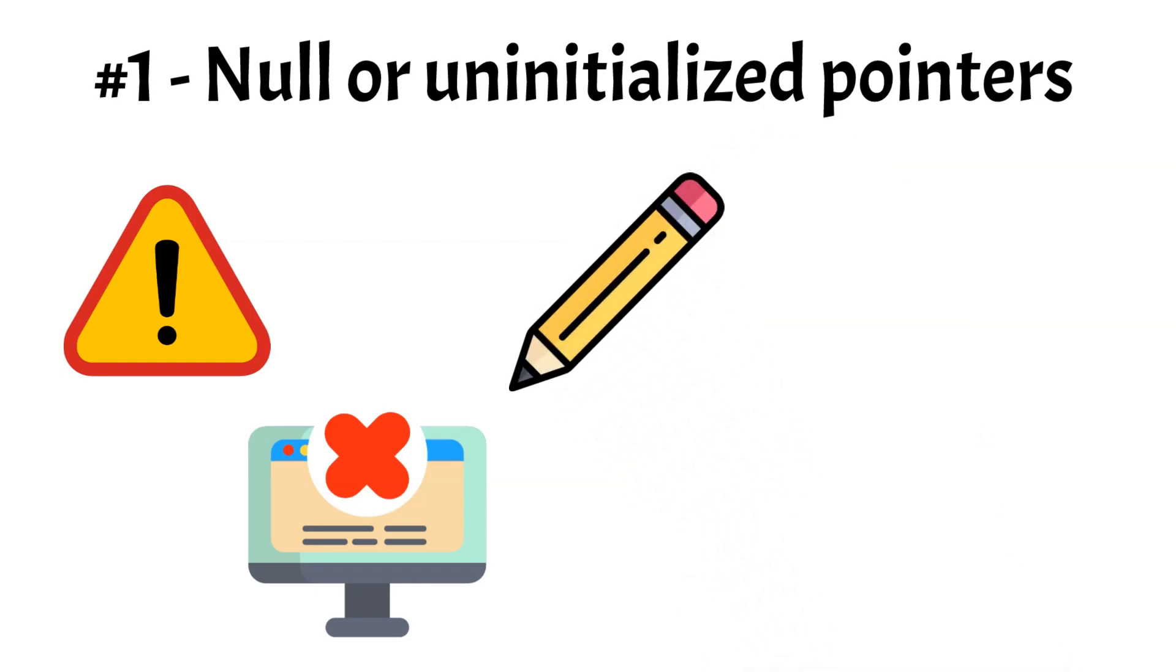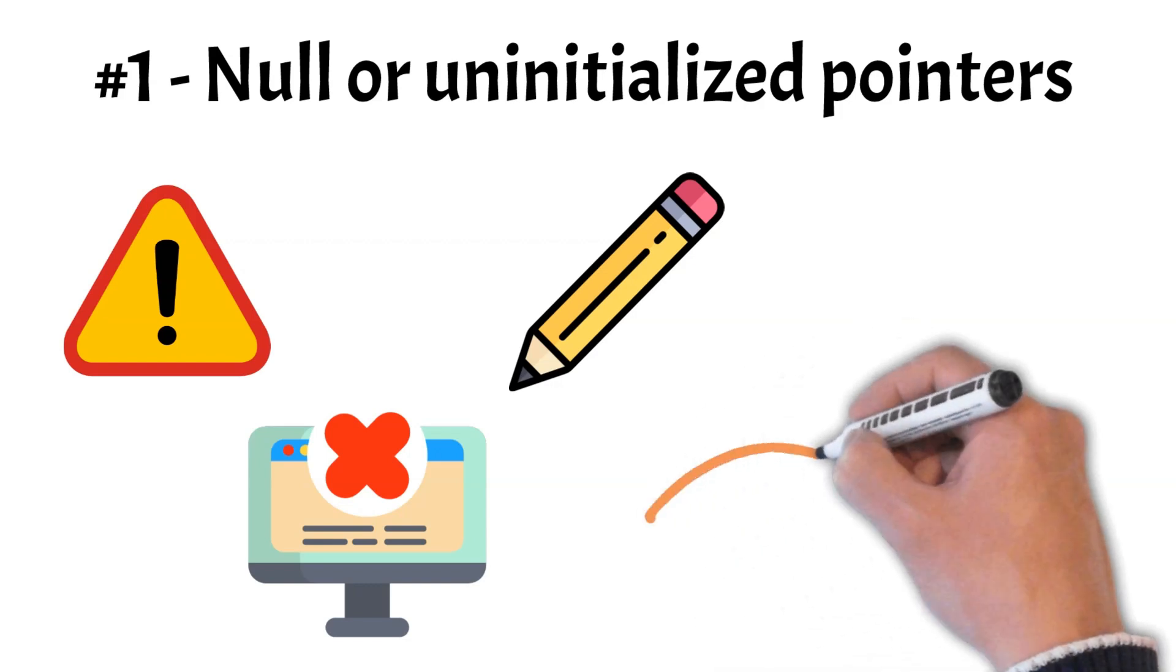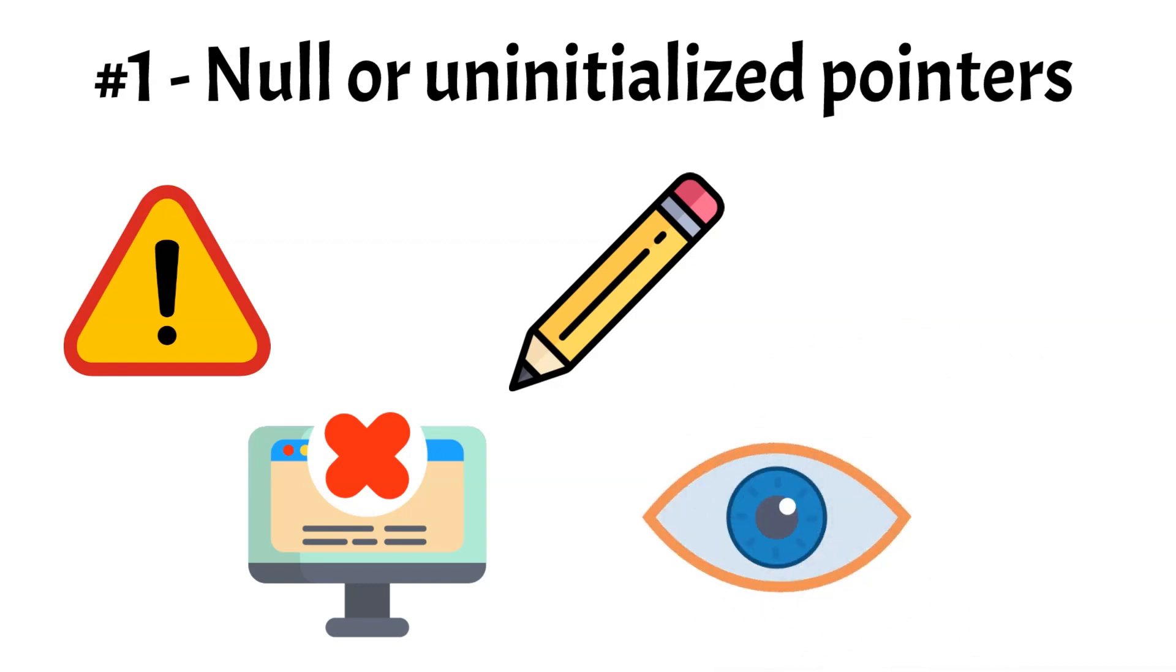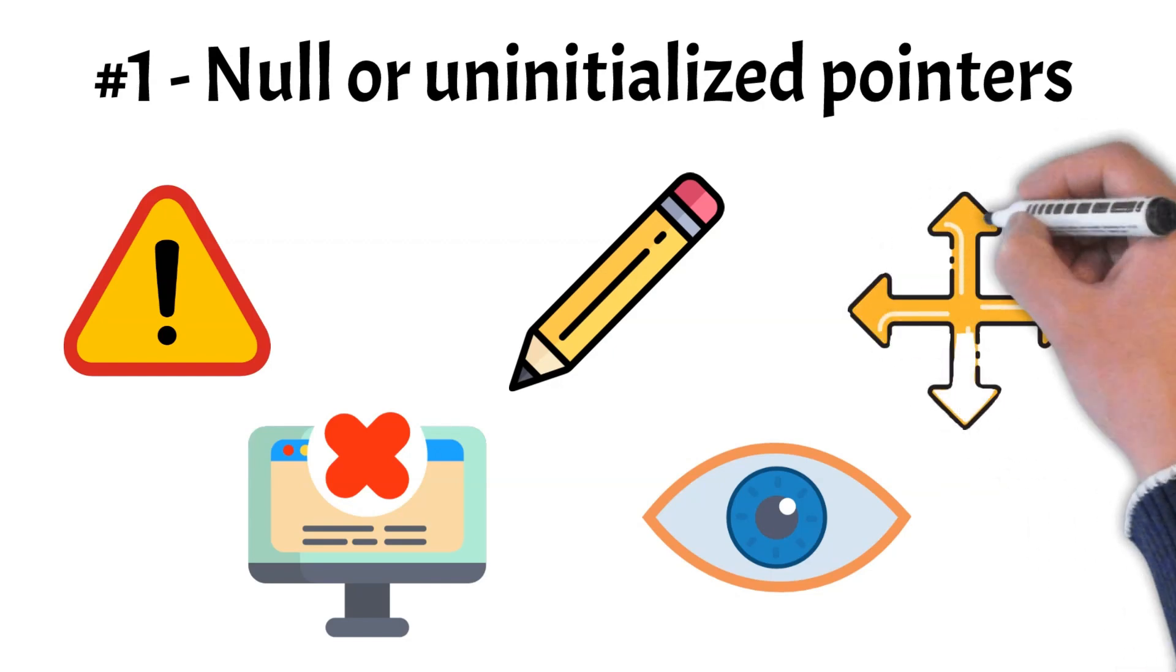The solution for that is to always initialize your pointers when you declare them, even if you don't have an immediate value to assign. Additionally, before dereferencing a pointer, ensure it is not null by adding checks in your code. For instance, use conditional statements to verify that the pointer points to a valid memory address before using it.